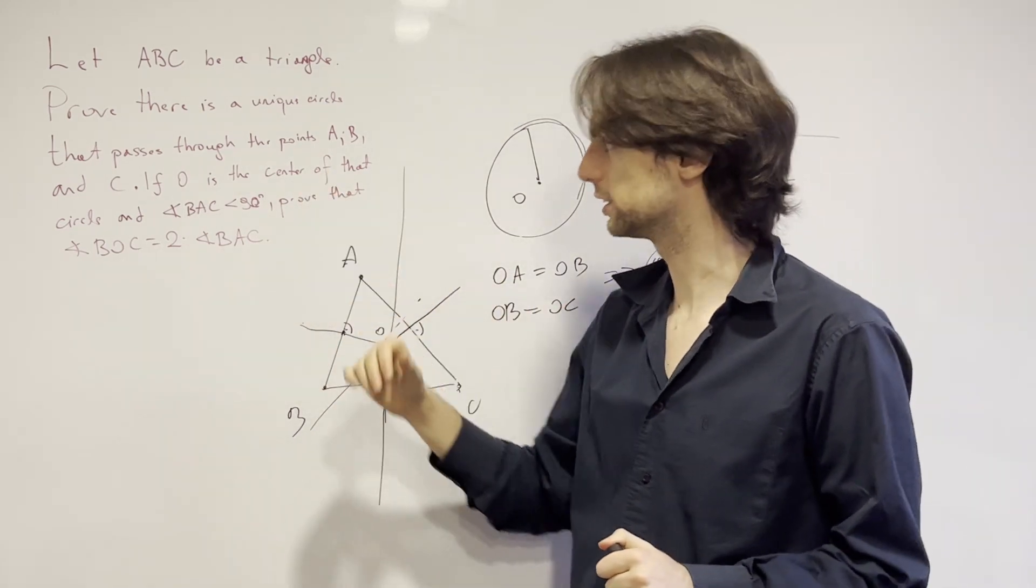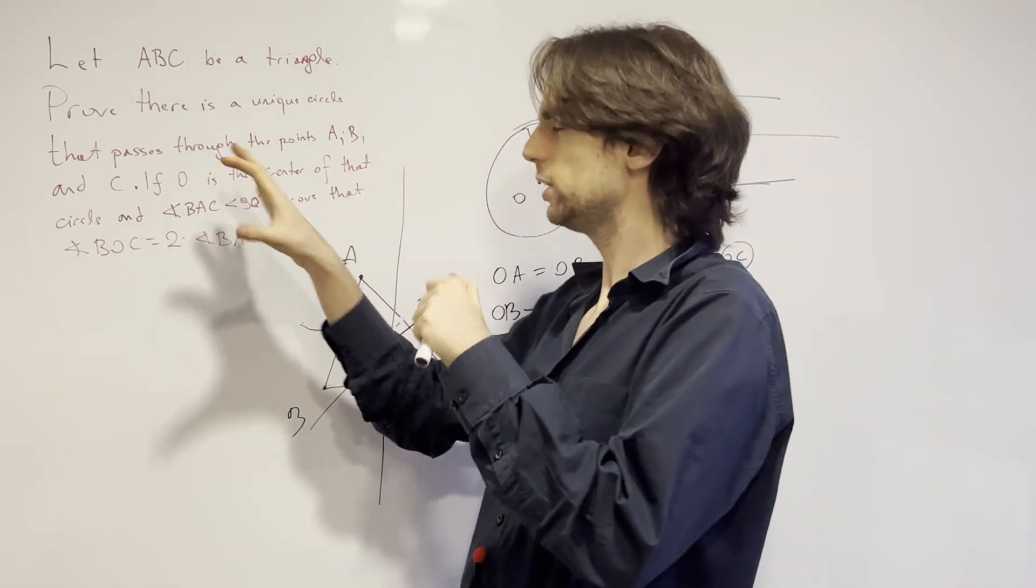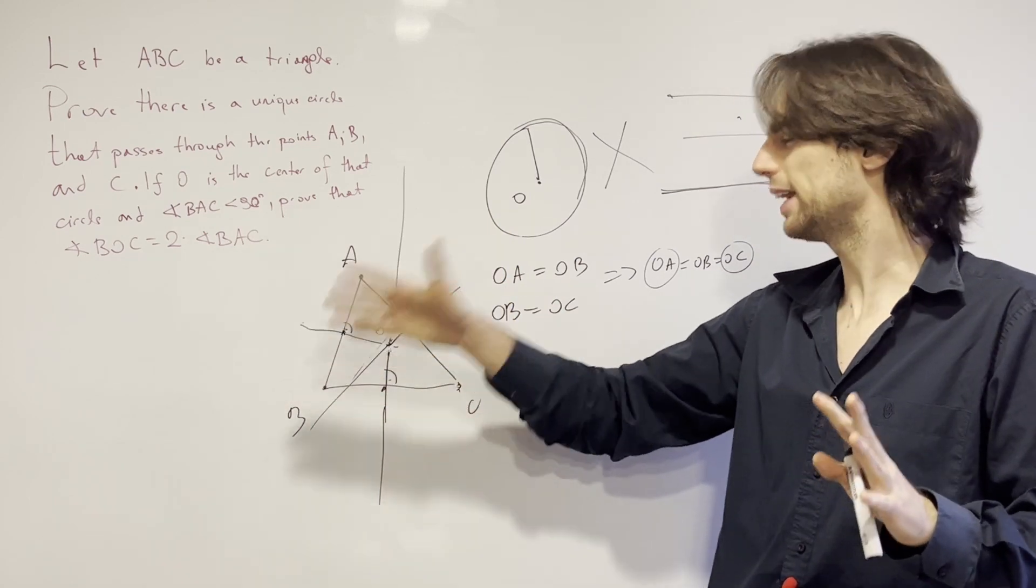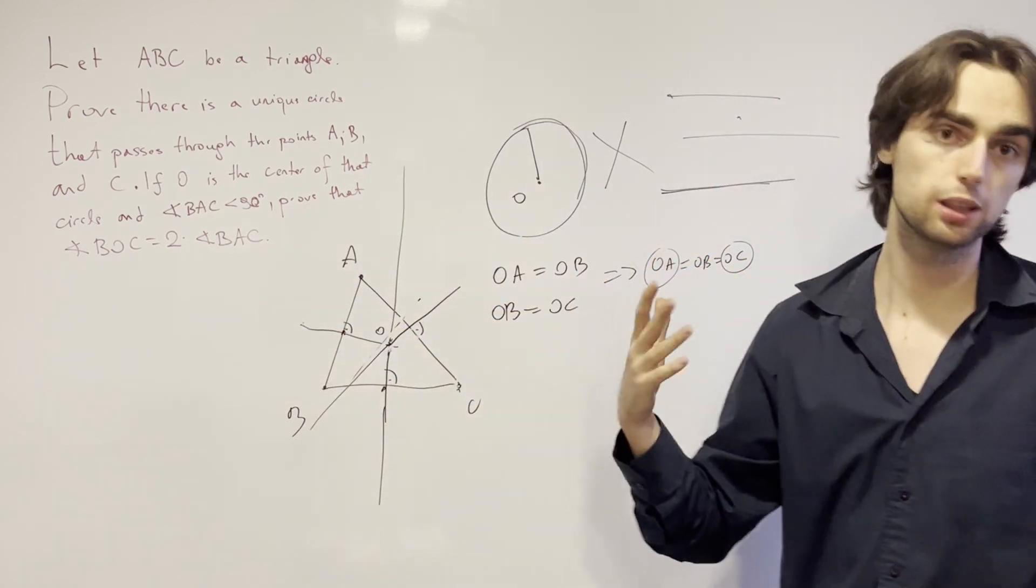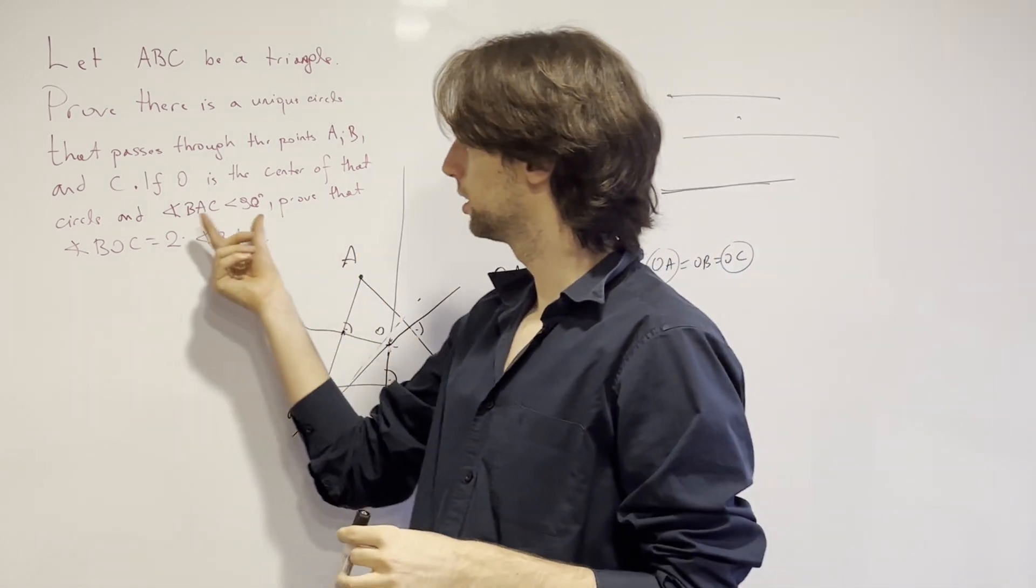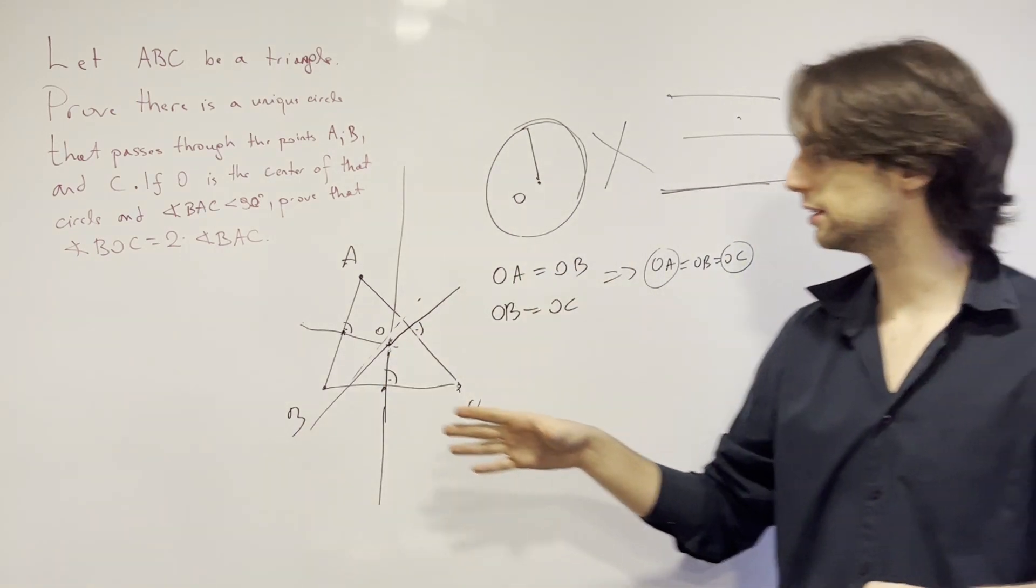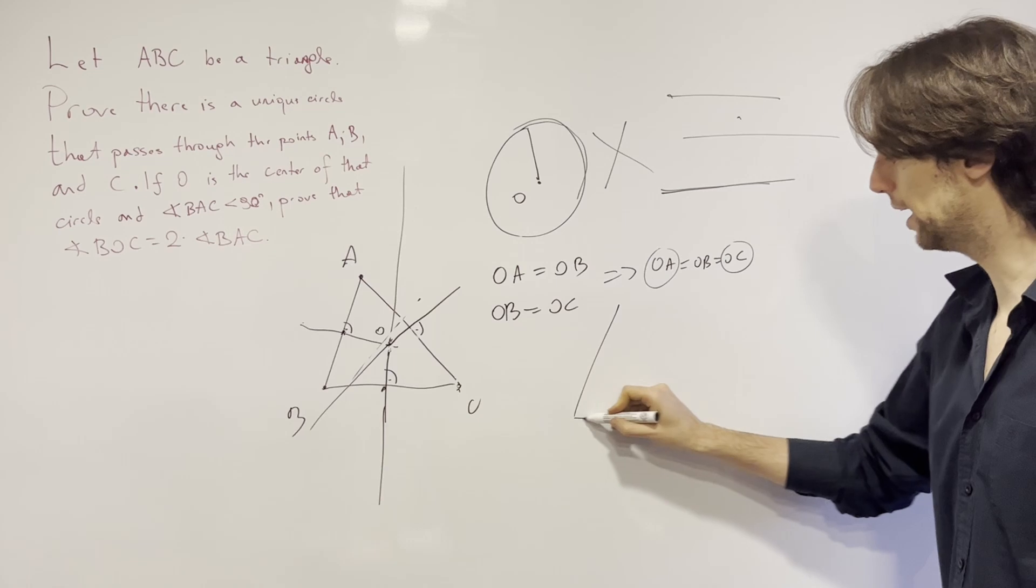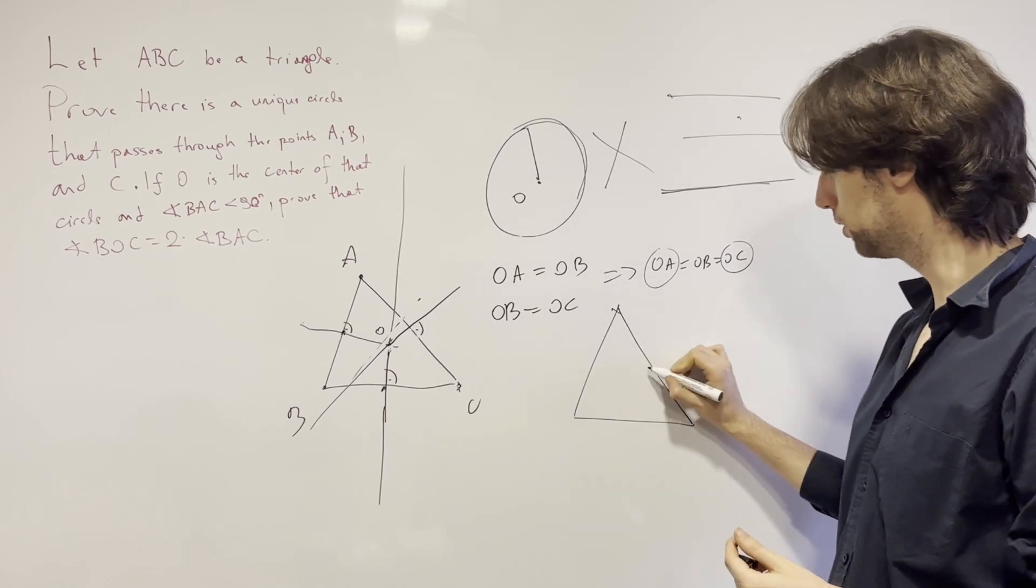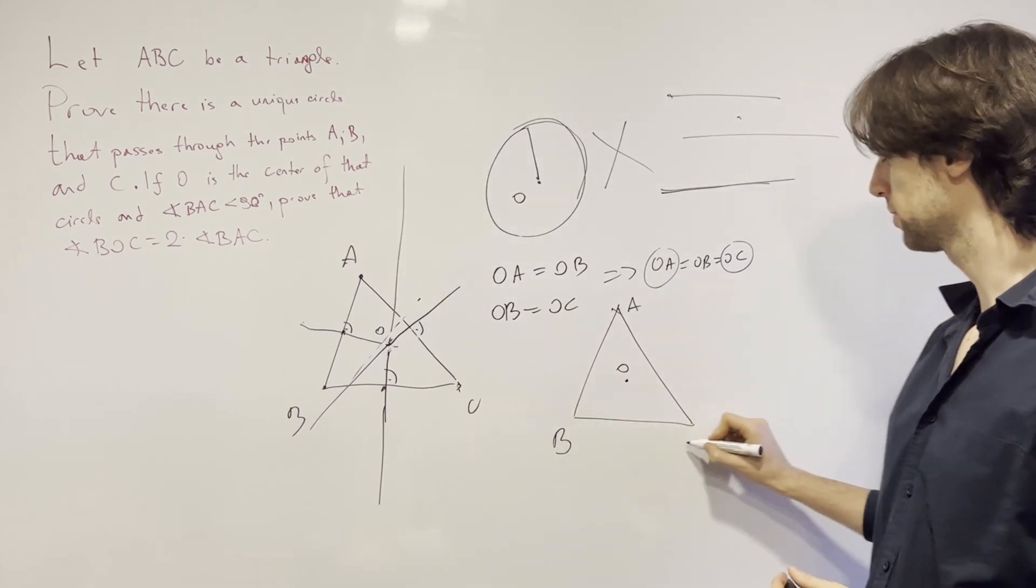That this intersection exists and it's unique. Now, the uniqueness, maybe we haven't really gone ahead and proved it, but for now, this is proof enough. We're taking for granted that these side bisectors do intersect at a point. So now, with this in mind, we need to show the second part. If BAC is less than 90, can we prove that the angle BOC is equal to two times the angle BAC? And for this, we're going to be introduced to a technique called angle tracing. And I'm going to show you a couple of things here.